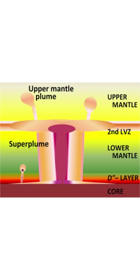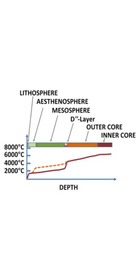The plume rises through the earth's mantle, becoming a diapir in the upper mantle, and tries to hit the crust, breaking through the lithosphere as well.